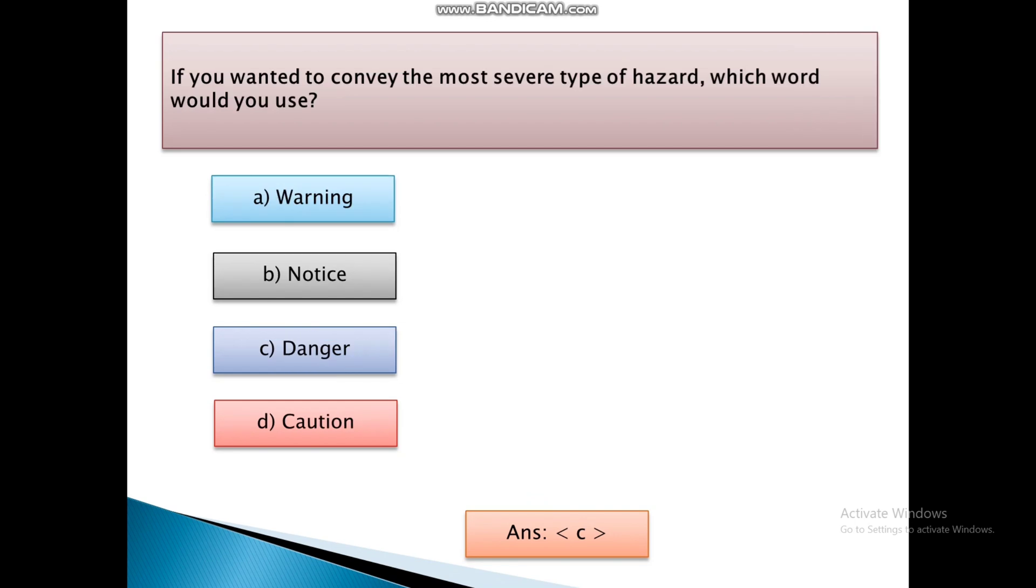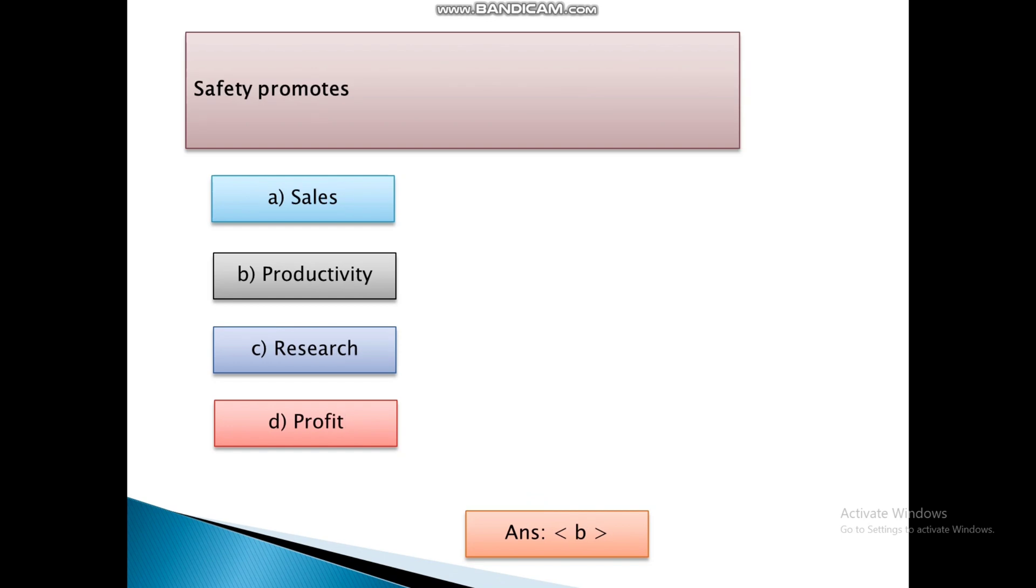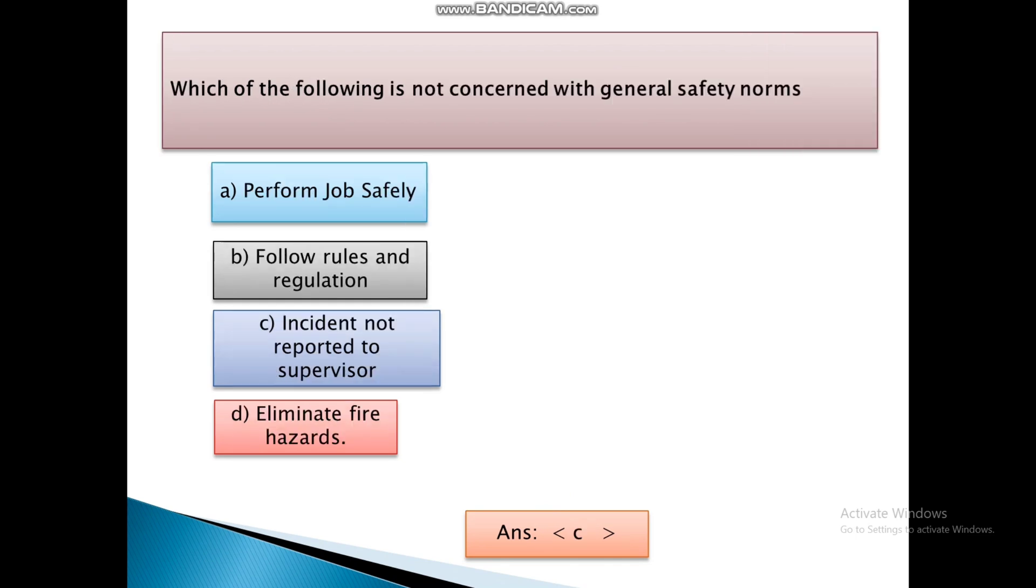If you wanted to convey the most severe type of hazard, which word would you use? First, Warning. Second, Notice. Third, Danger. Fourth, Question. And the answer is C, that is danger. Safety Promotes: First, Sales. Second, Productivity. Third, Research. Fourth, Profit. And the answer is B, that is safety promotes productivity.